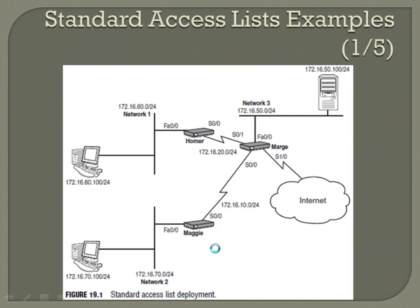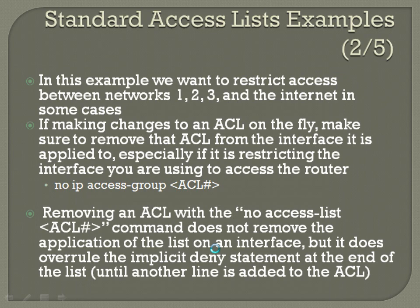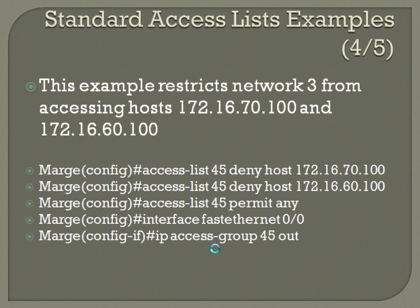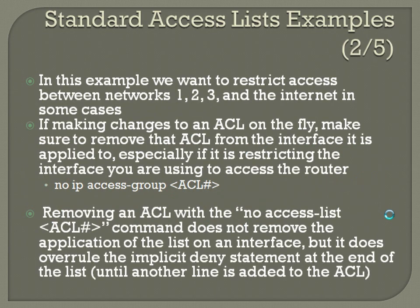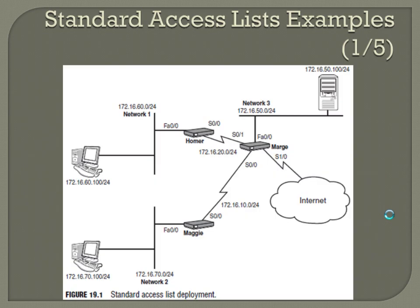Those are actually applied to those two PCs there. Let's think about where we want to apply the ACL. It's going to prevent these things from getting back over here, so we're applying it right here on this FastEthernet 0/0 interface that's closest to the destination — Network 3.